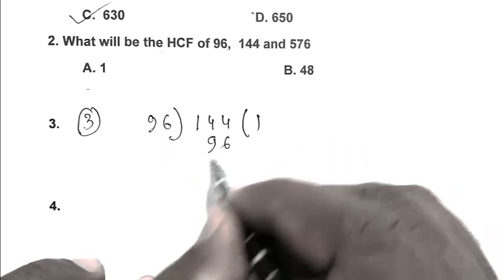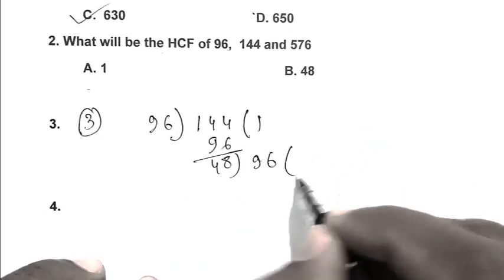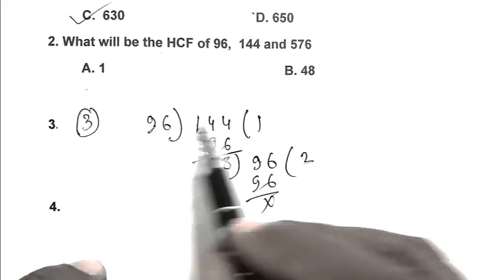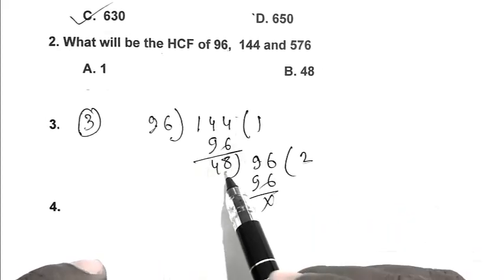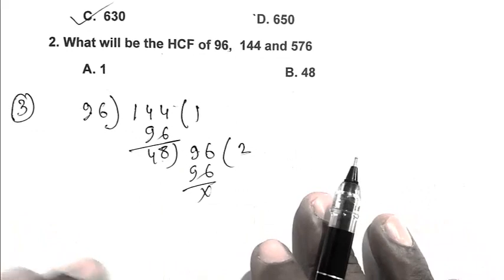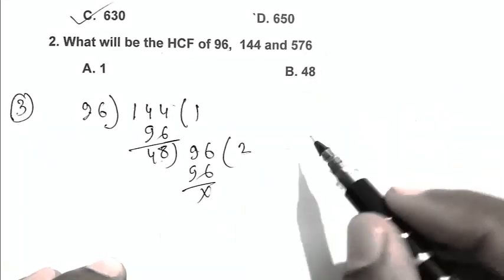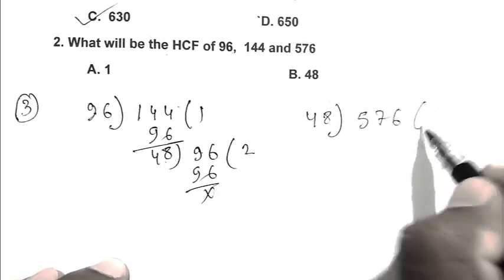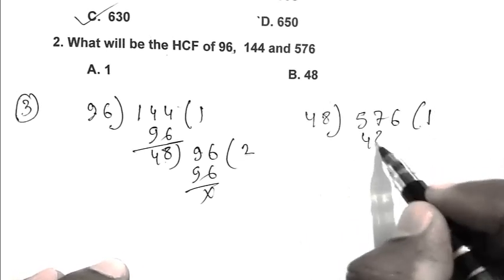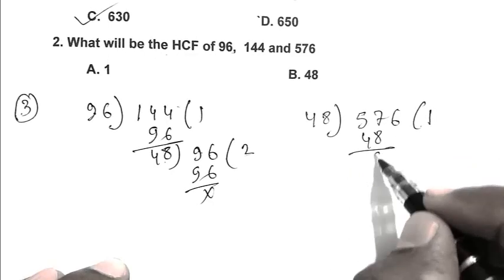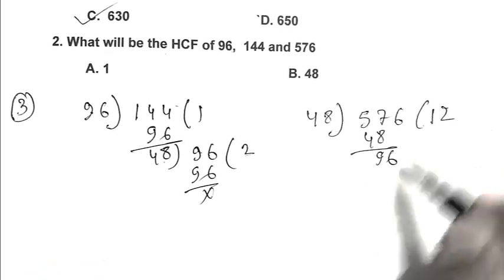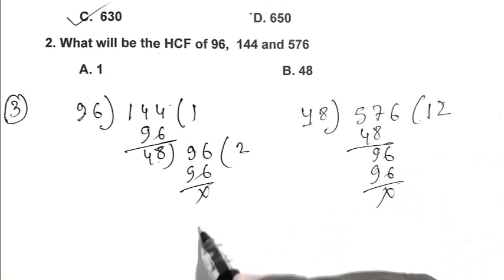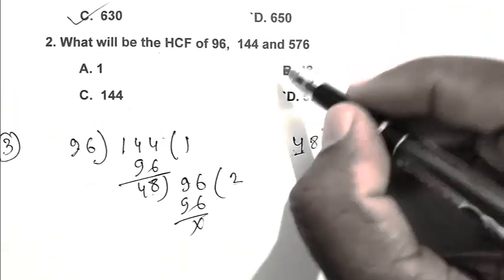1 times 96, remainder 48. Then 96 divided by 48 gives 2 times 96. So the HCF is 48. So B is the right answer.